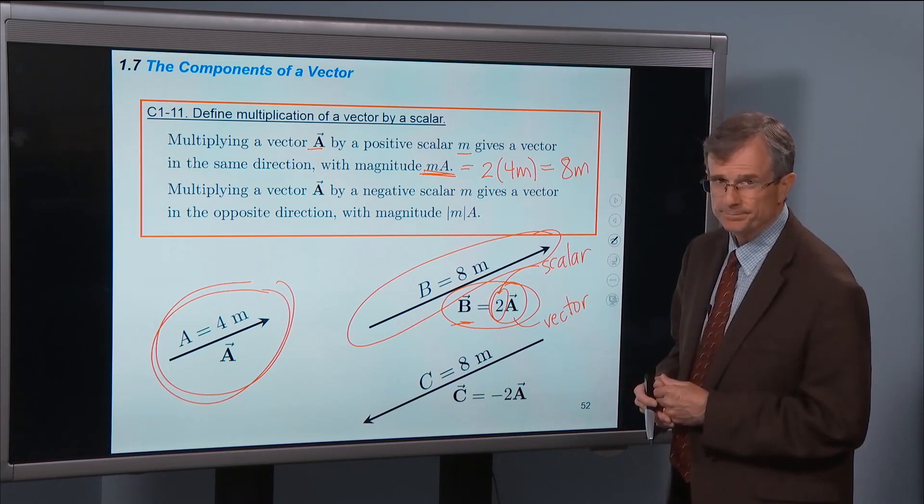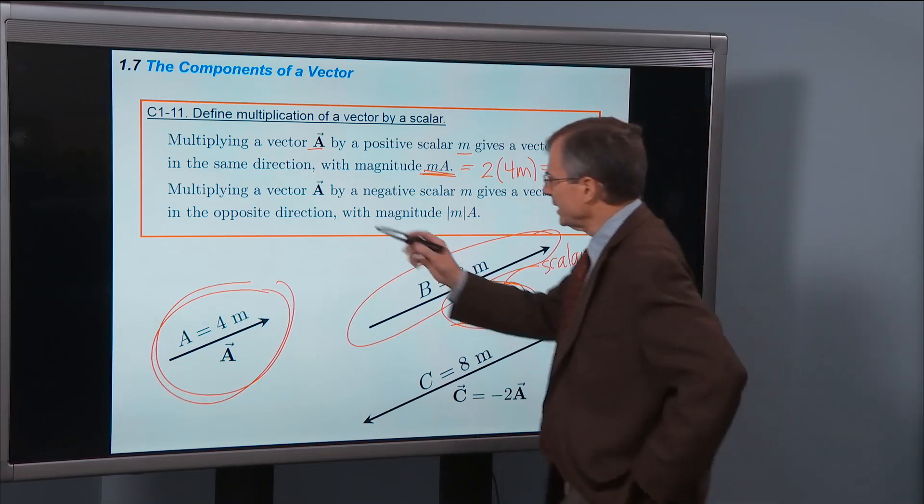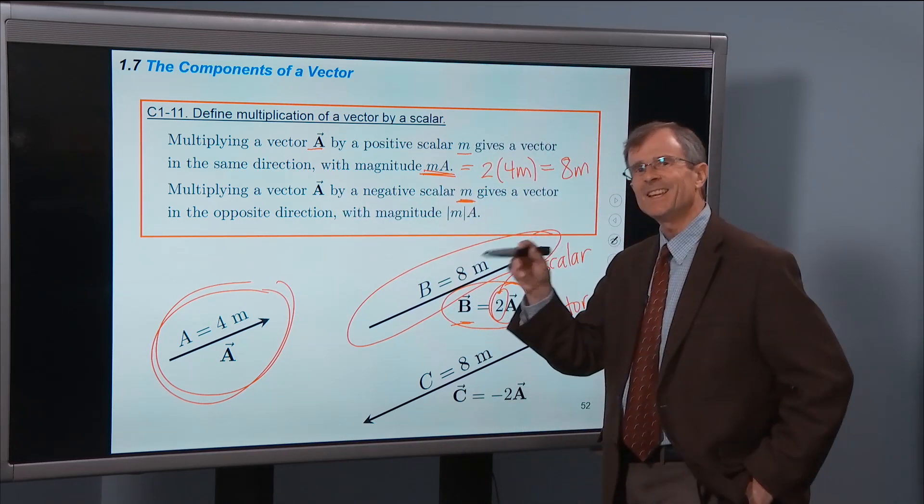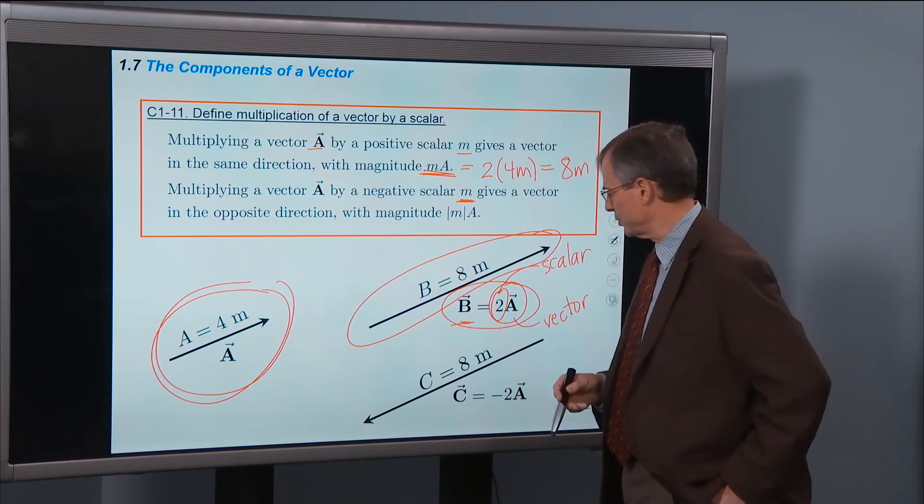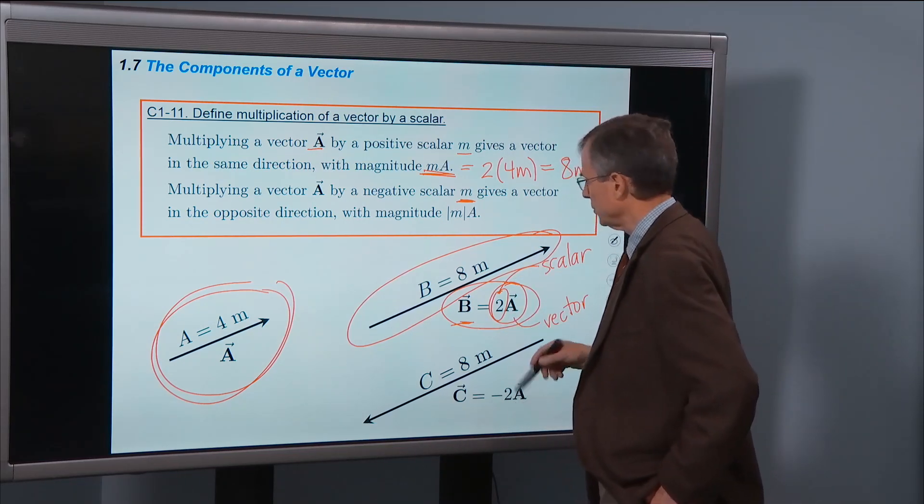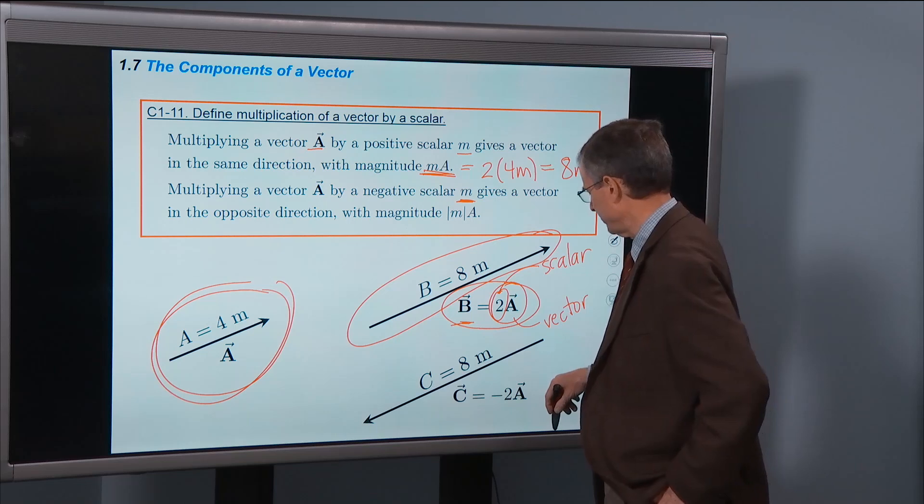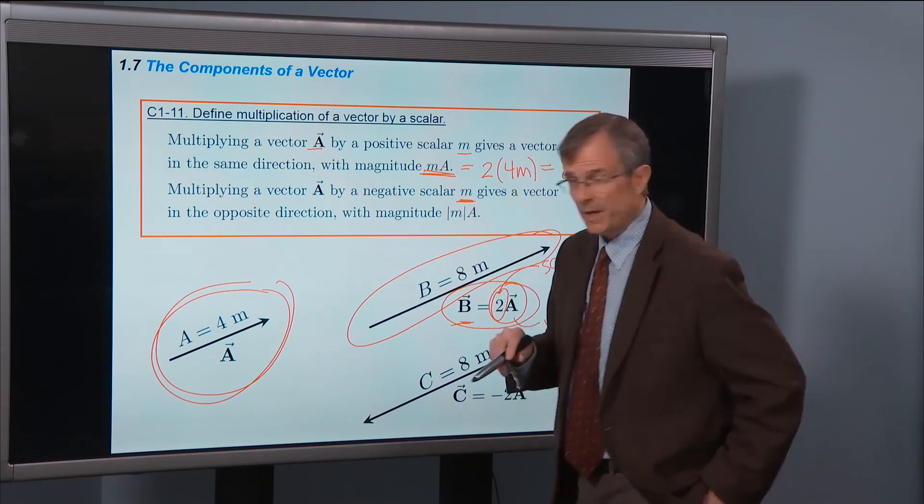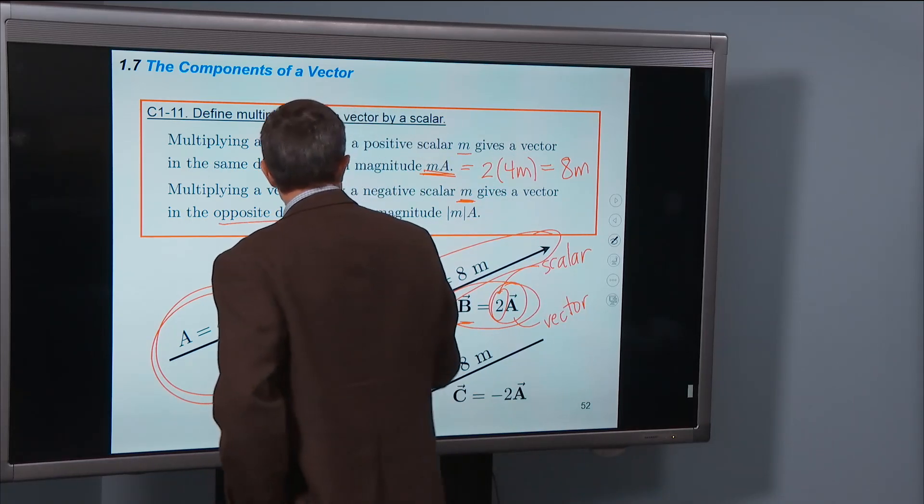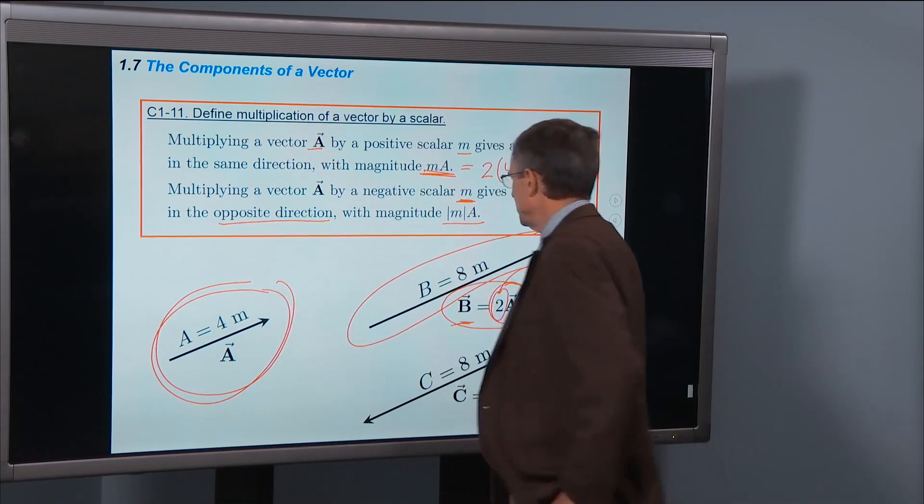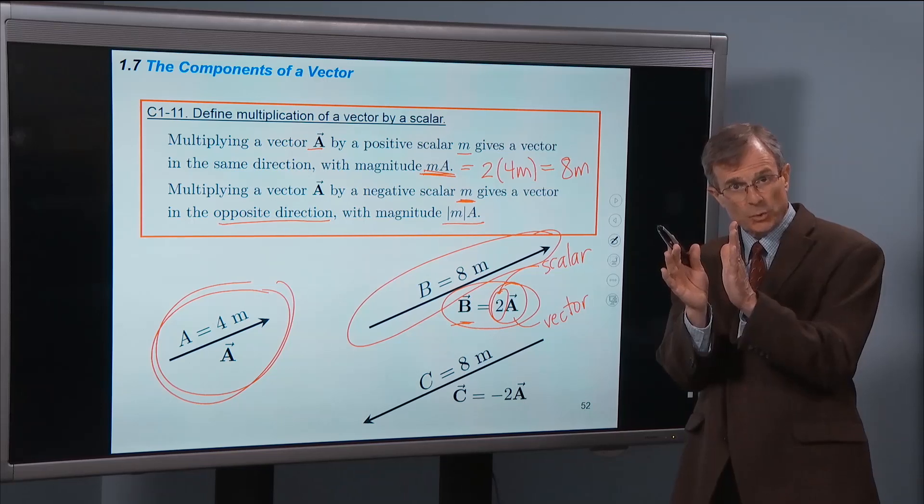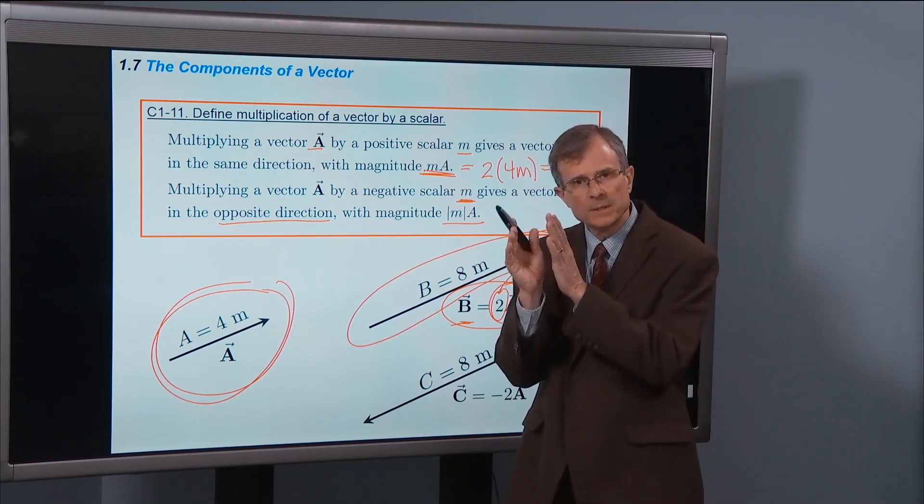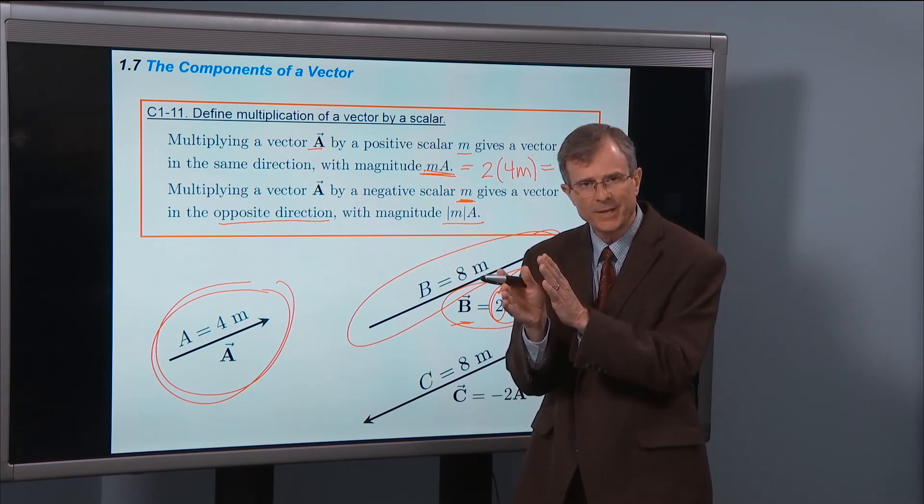The second part: multiplying a vector A by a negative scalar m. So now m is a negative number, m equals minus 2, for example, and that's what we will do for this particular example. It gives a vector in the opposite direction.